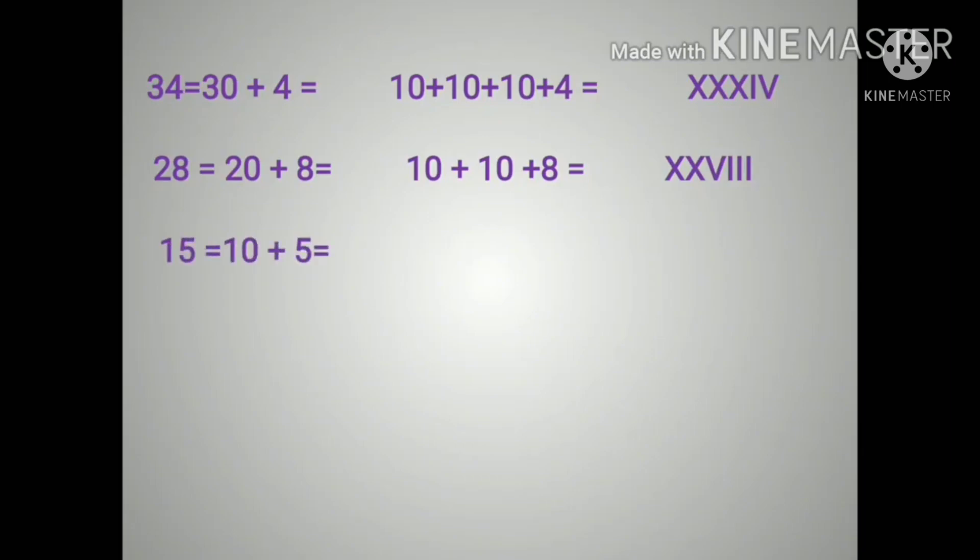Next, 15 which is equal to 10 plus 5. We know that X is equal to 10 and V is equal to 5, so the answer is XV. Next, 19 which is equal to 10 plus 9, and we know that 10 is equal to X and 9 is equal to IX, so the answer is XIX.